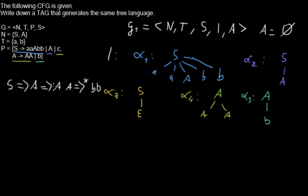And if you write down the tree for this derivation, you have the S as the mother node with the A, with two A daughter nodes and with each of them having a B as daughter nodes.